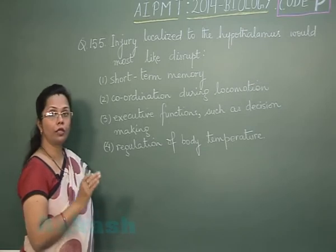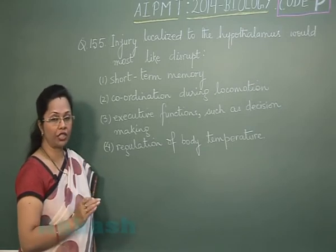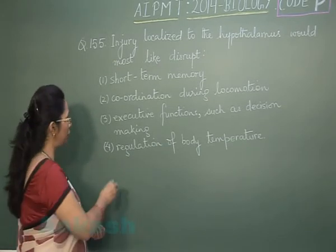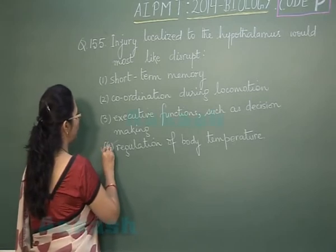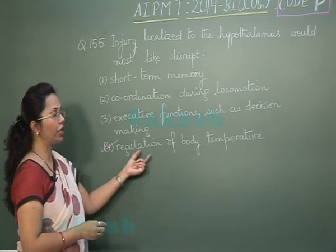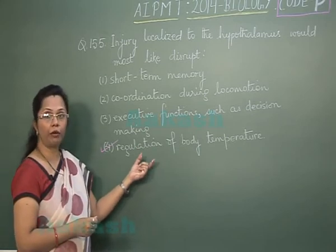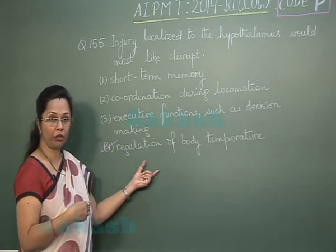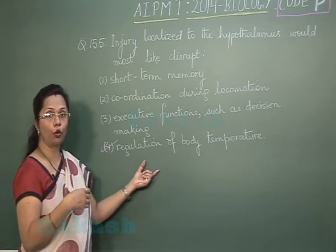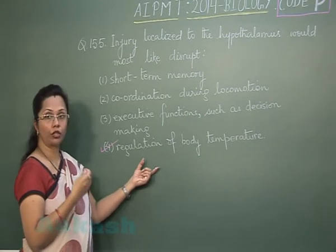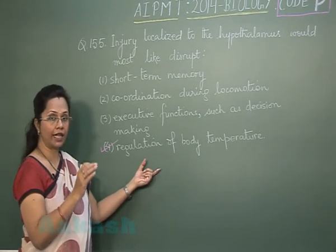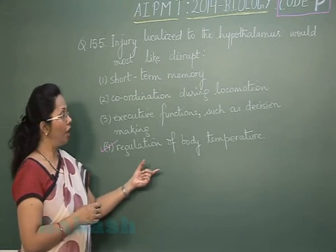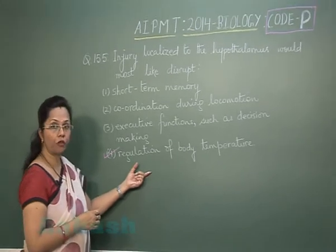Regulation of body temperature is the function of the hypothalamus, as it is the thermoregulatory center of the body. It also controls appetite, satiety, and thirst. Our answer is option 4 — regulation of body temperature. If the hypothalamus is injured, the ability to bring temperature down when too hot or raise it when too cold — maintaining it at a set point — would be lost.